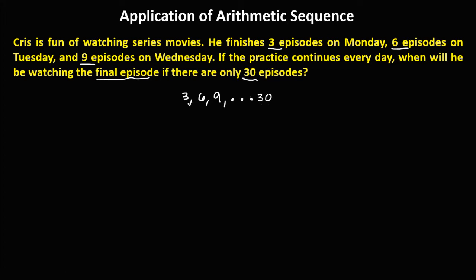From the given sequence, the first day is a sub one, the second day is a sub two, the third day is a sub three, and the last day is a sub n. We use the formula for the arithmetic sequence: a sub n equals a sub one plus (n minus one) times d.